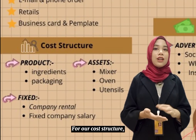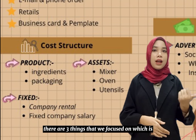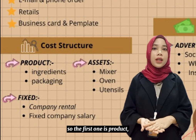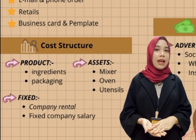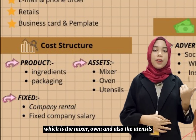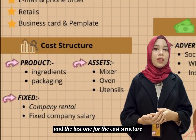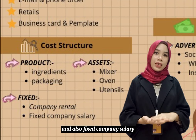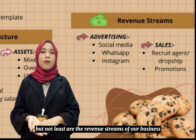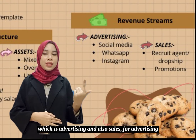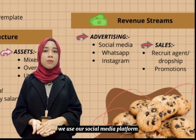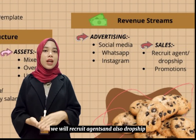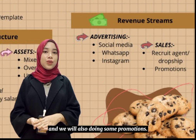For our cost structure, there are three things we focus on: product, assets and fixed costs. The product includes ingredients and packaging. Assets include the mixer, oven and utensils. Fixed costs include company rentals and fixed company salary. Last but not least, the revenue streams of our business are advertising and sales. For advertising, we use social media platforms such as Instagram and WhatsApp. To increase sales, we will recruit agents and dropshippers, and we will also run promotions.